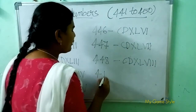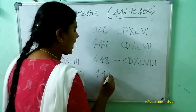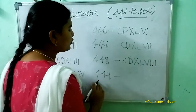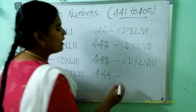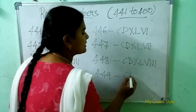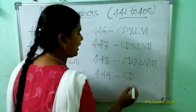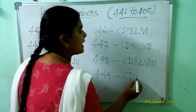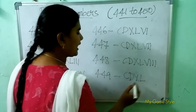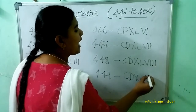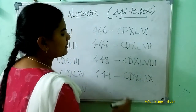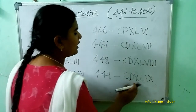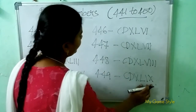Next, 449. So how to write 449 here? CD is 400, XL is 40, IX is 9. So this means 449.